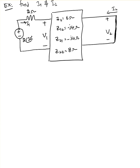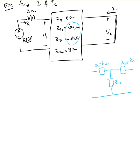Since Z12 and Z21 are both the same, I can draw a Z-equivalent network, or T-equivalent network. The element values would be Z11 minus Z12, then Z12, then Z22 minus Z12 — giving us 6 minus j4, minus j4, and 8 minus j4. That's one way to do it, but I'm not going to use that approach here.